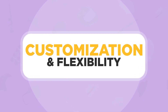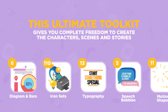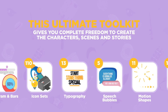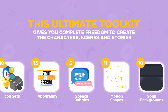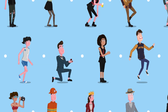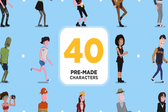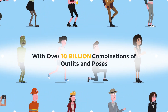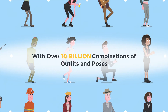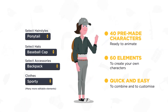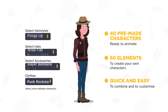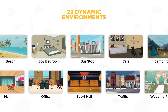Customization and Flexibility — this ultimate toolkit gives you complete freedom to create the characters, scenes, and stories that your audience needs to see. There are 40 pre-made characters with over 10 billion combinable outfits and poses. You can customize everything from skin texture and facial expressions to hairstyles and accessories, and then place your characters within our 22 dynamic environments.